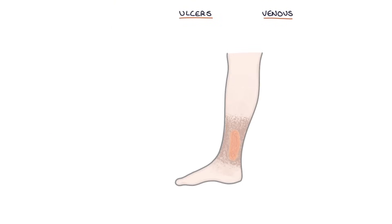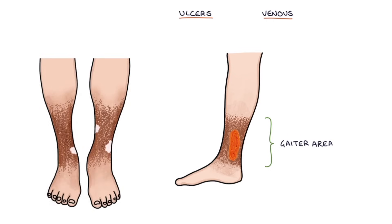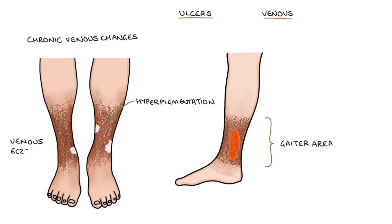With venous ulcers, they typically occur in the gaiter area — the area between the top of the foot and the bottom of the calf muscle. They're associated with chronic venous changes such as hyperpigmentation, venous eczema, and lipodermatosclerosis.